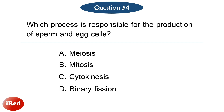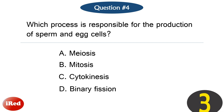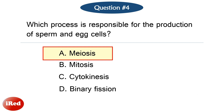Question number four. Which process is responsible for the production of sperm and egg cells? The correct answer is letter A: meiosis.